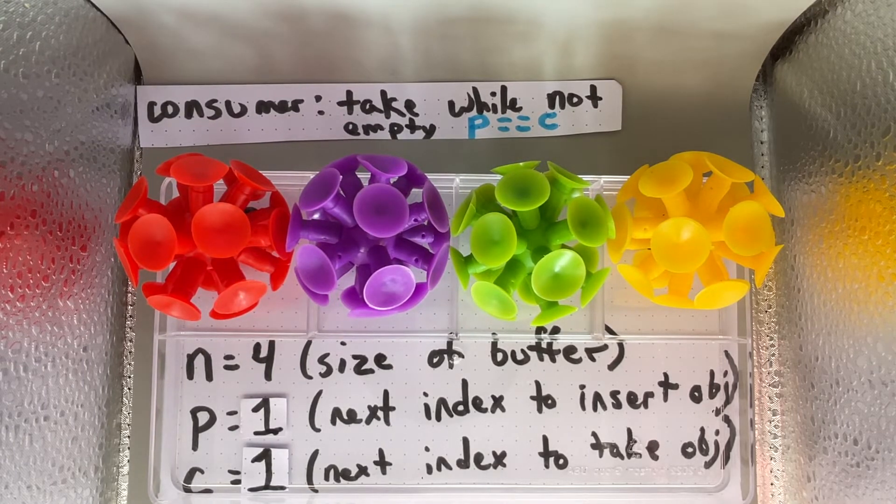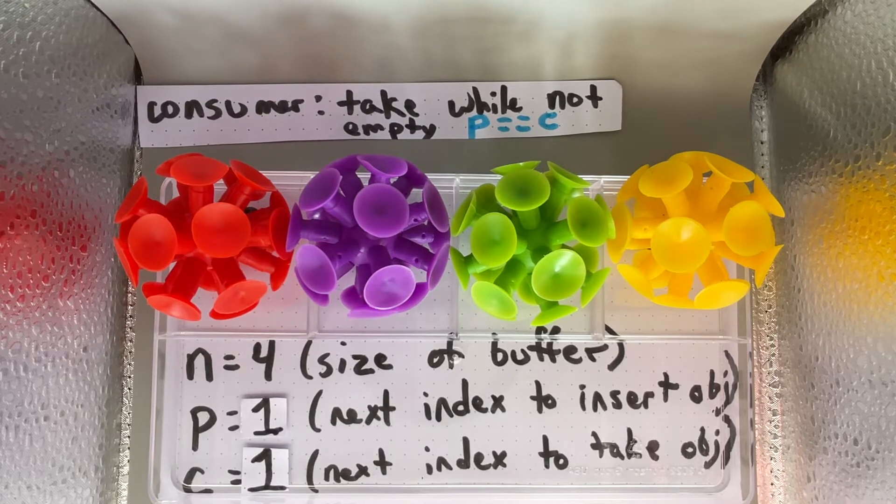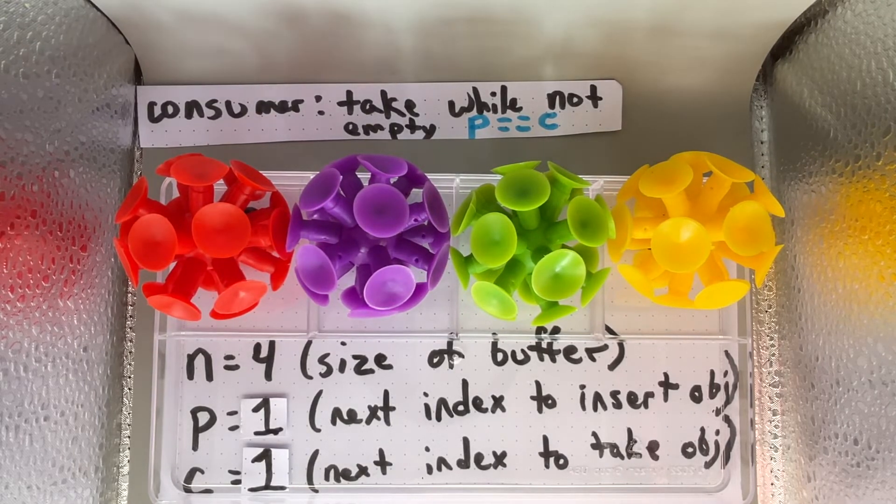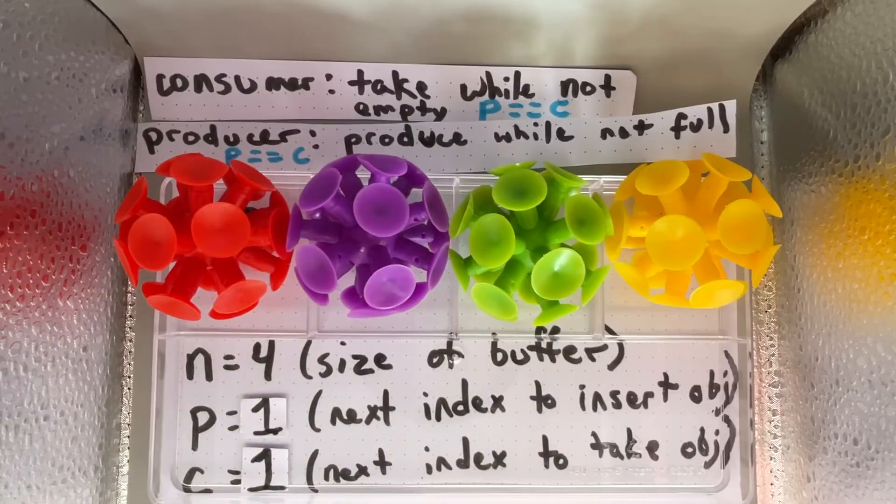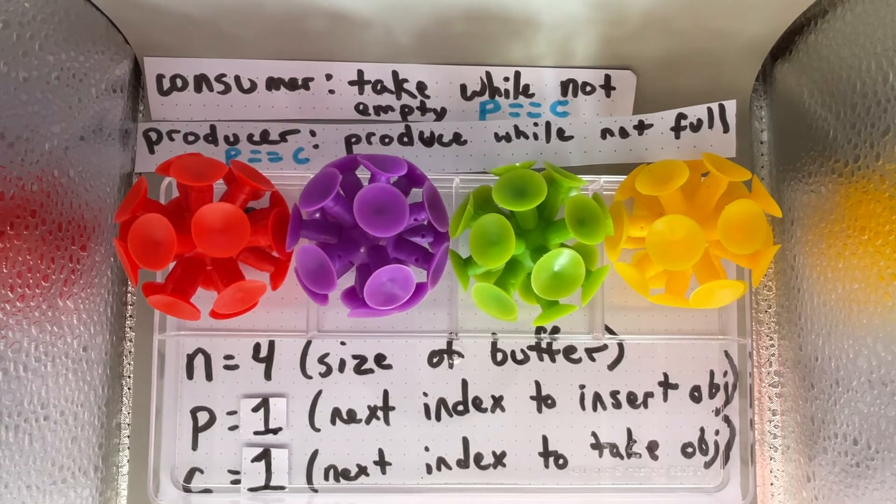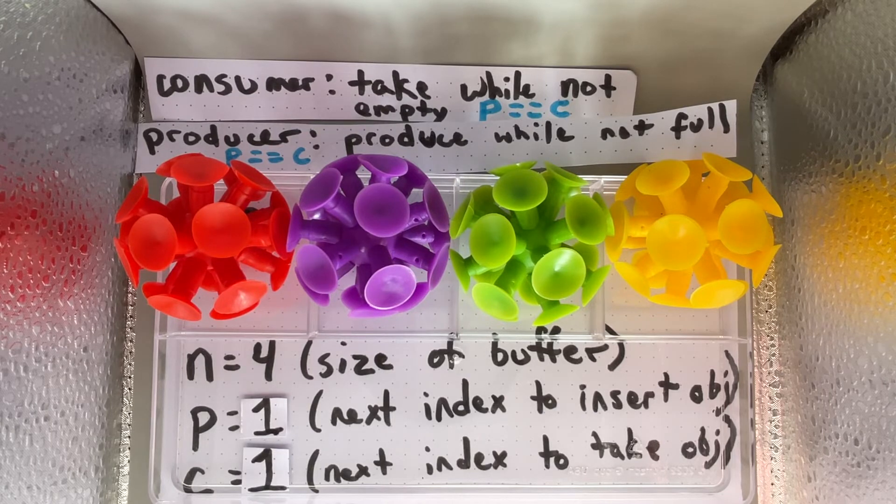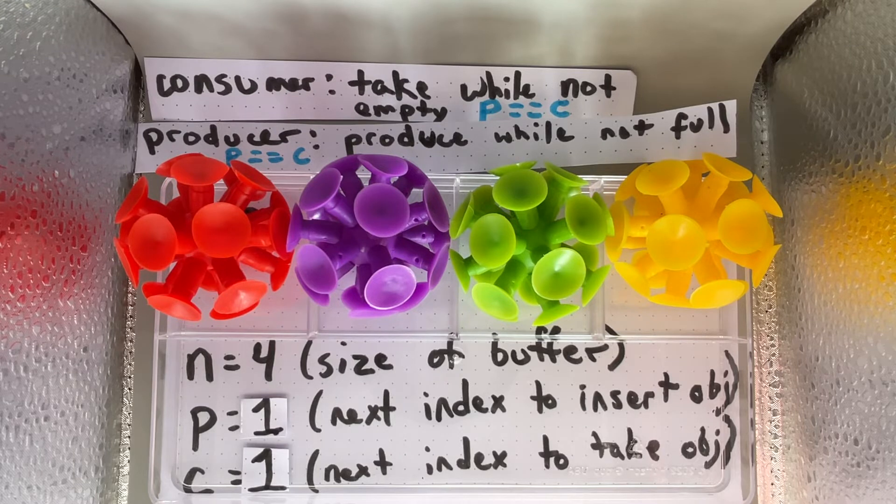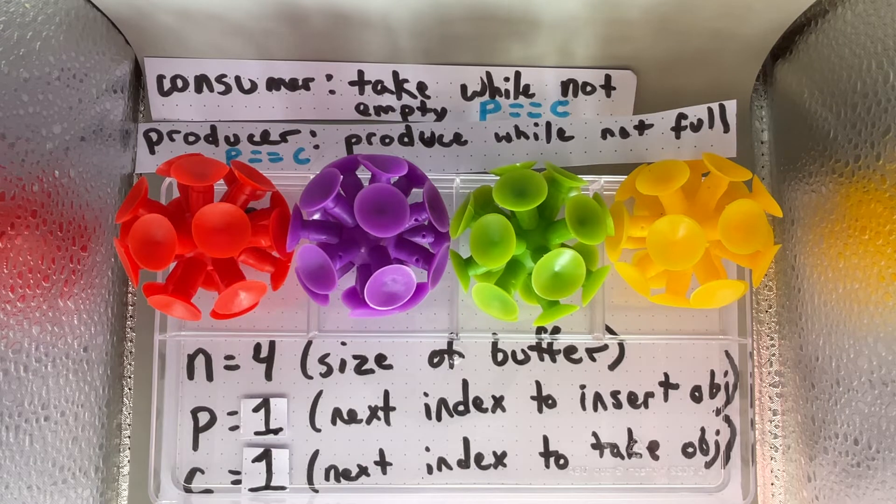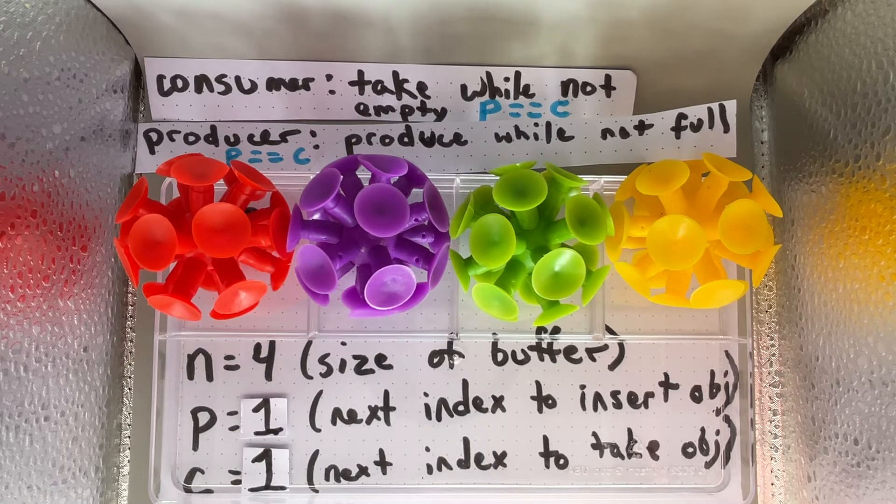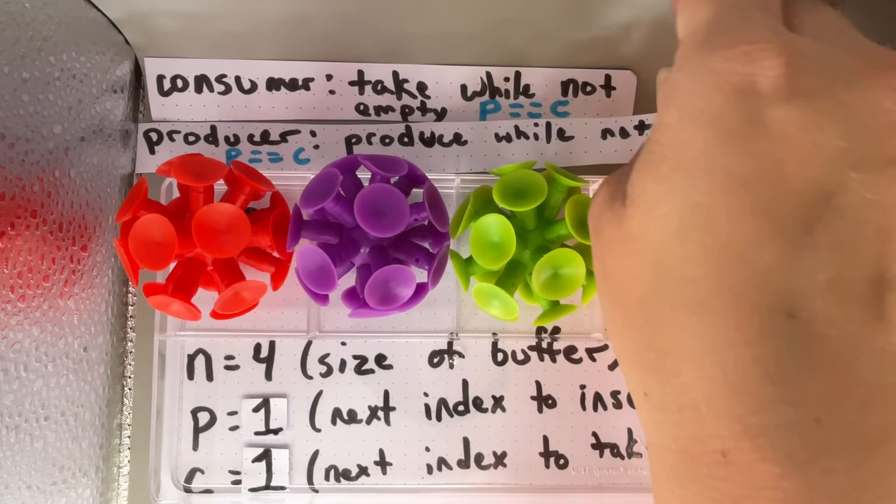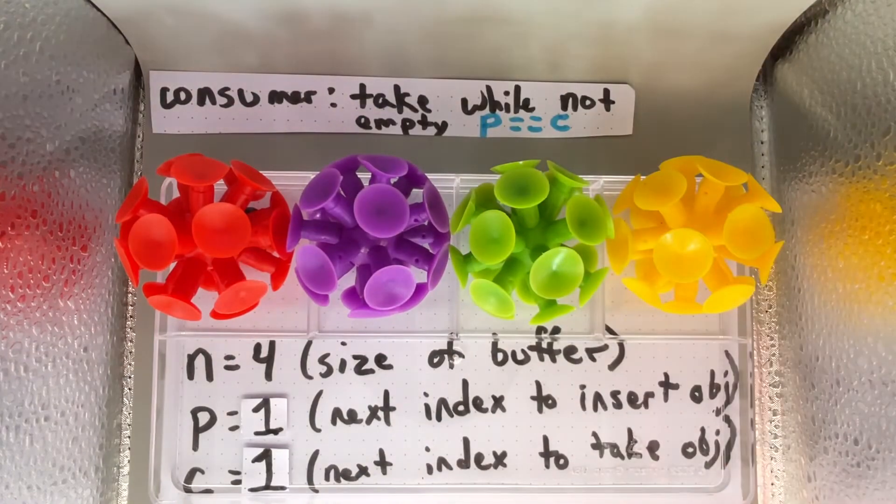We can tell the producer cannot put anything into the buffer because it is full since p equals c. But wait, if we can tell that the buffer is empty when p equals c and we can tell that the buffer is full if p equals c, now we can't tell if we're full or empty. The entire algorithm stops working. We need a different definition for full.